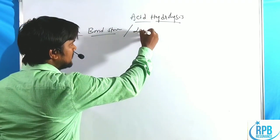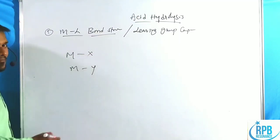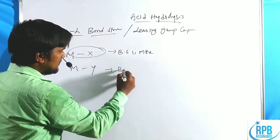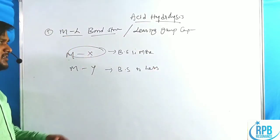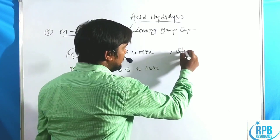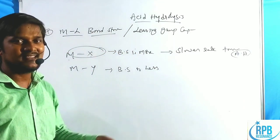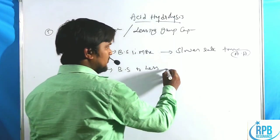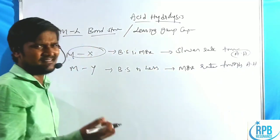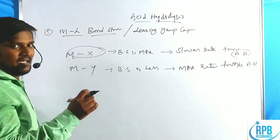Factor 1: Metal-ligand bond strength, also defined as leaving group capacity. Comparing two bonds: if the metal-X bond has more bond strength, dissociation is not easy, giving a slower rate towards acid hydrolysis. If bond strength is less, the bond is ready to break, giving a higher rate towards acid hydrolysis.